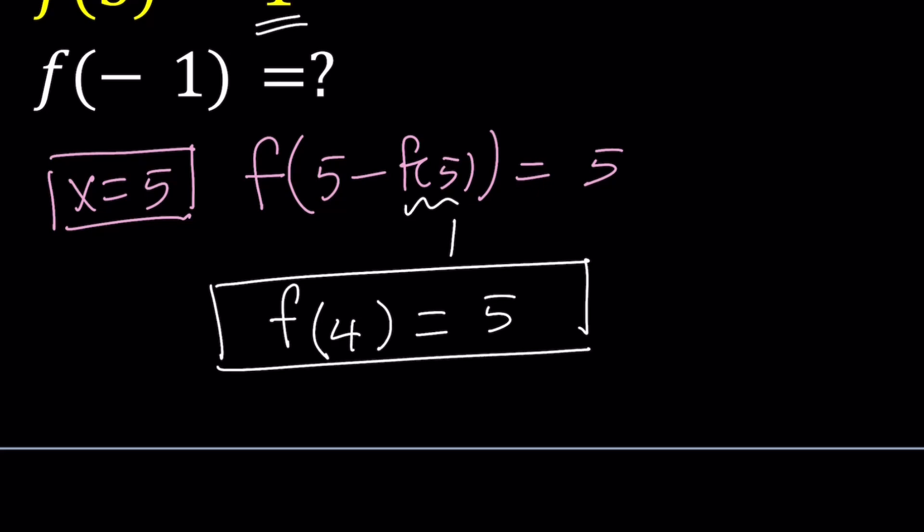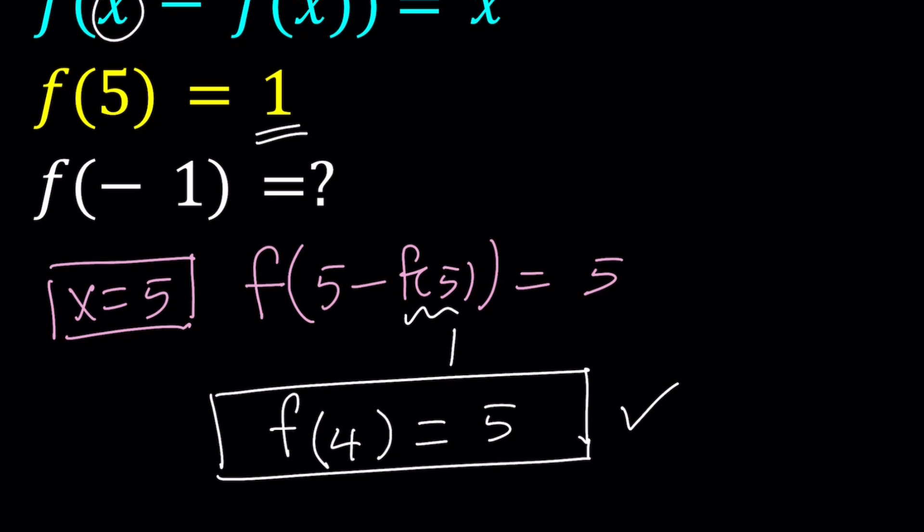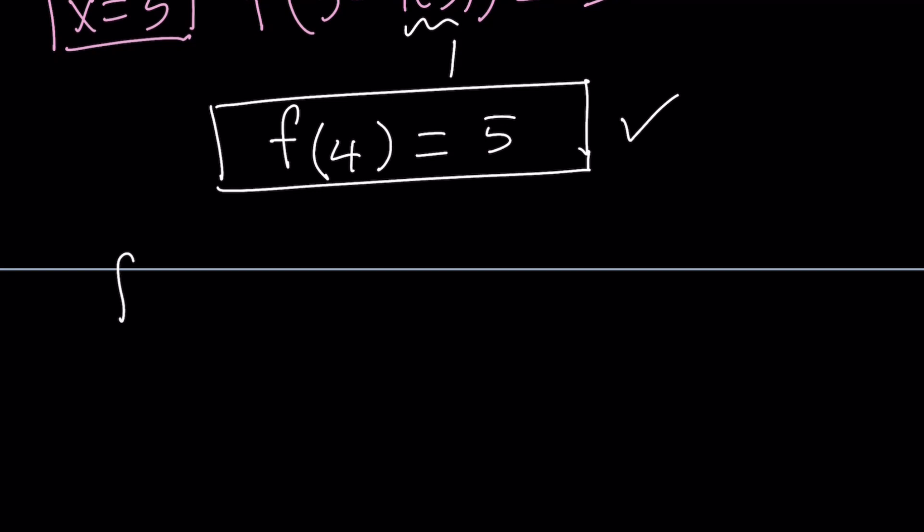That's not what we're looking for but we're going to use it for sure. Now we're looking for f of negative 1. So since we got f of 4 from here, let's go ahead and replace x with 4 now in the original equation. So remember one more time f of x minus f of x is given as x. And we're going to fix this.